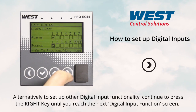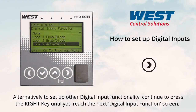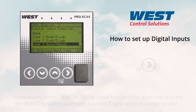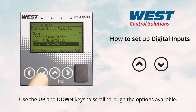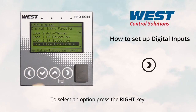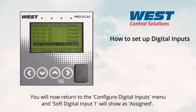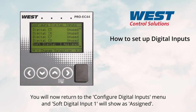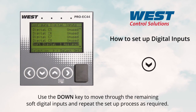Alternatively, to set up other digital input functionality, continue to press the right key until you reach the next digital input function screen. Here, use the up and down keys to scroll through the options available, then press the right key to select an option. You will now return to the configured digital inputs menu and soft digital input 1 will show as assigned. Use the down key to move through the remaining soft digital inputs and repeat the setup process as required.